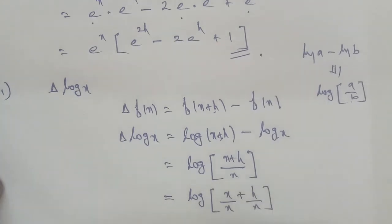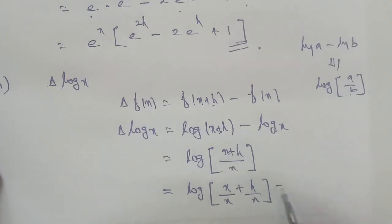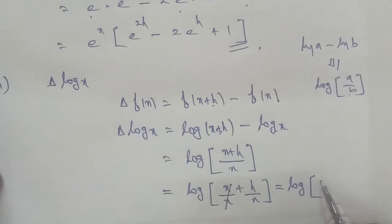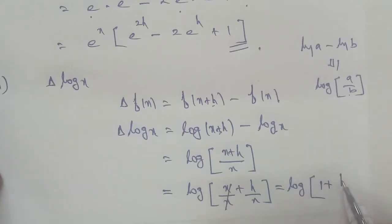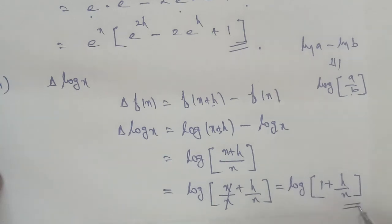So log of x plus h by x. Splitting: log of x plus h by x. Taking x as common and cancelling, we get log of 1 plus h by x. That is the final answer: delta log x equals log of 1 plus h by x. Thank you.